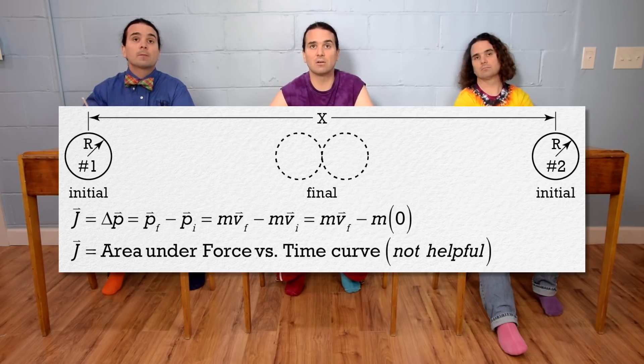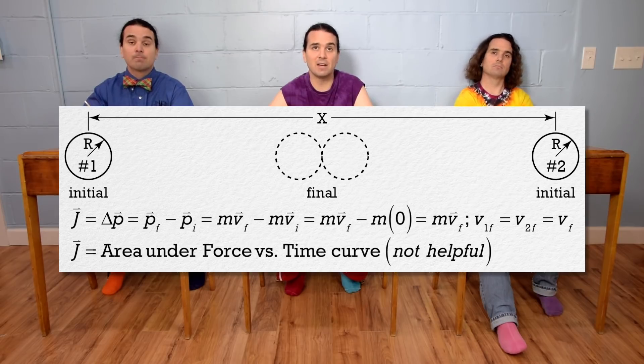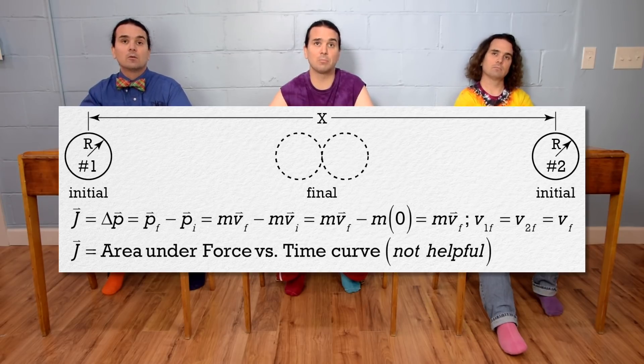That equals momentum final minus momentum initial, or mass times velocity final minus mass times velocity initial. Velocity initial equals zero, so the impulse delivered to each sphere equals mass times velocity final. We know the mass, it's just m, so all we need is the final velocity of each sphere, which should be the same because the two spheres are identical.